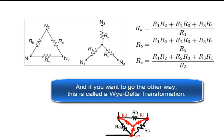And if you want to go the other way, this is called a Y delta transformation. Calculating A, B, and C given 1, 2, and 3.